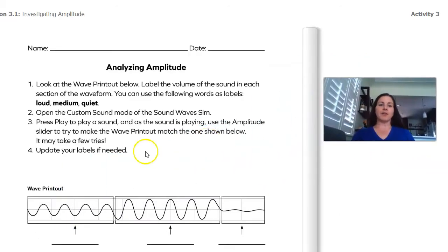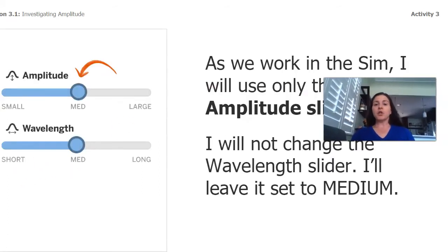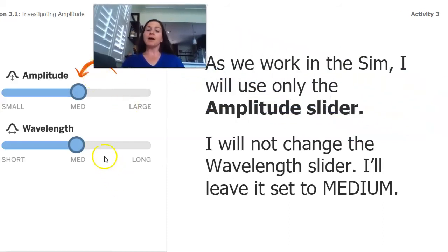So I've zoomed in on that page. We're going to look at the wave printout below. We're going to label the volume of the sound in each section of the wave form. And we can use the following words as labels, loud, medium, and quiet. So I'm going to open the custom sound mode, same place. I'm going to press play. Then I'm going to use the amplitude slider again. And I'm going to try to match these waves. And then we're going to update our labels. So just a note, I'm only going to mess with the amplitude slider. I'm not going to change the wavelength one. I'm just going to leave that at medium for now.